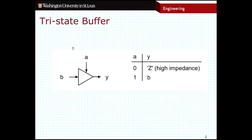This component on the screen is called a tri-state buffer. It has an input B, which is some vector of binary values. It also has another input A, which acts as a gatekeeper. If A is high, then B is just going to flow right through the tri-state buffer. If A is low, then B will not be able to flow through. We use the signal Z to indicate high impedance, which is basically blocking the flow — it's not a zero, it's not a one, it's just nothing.